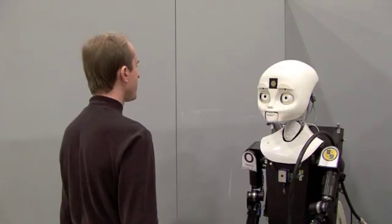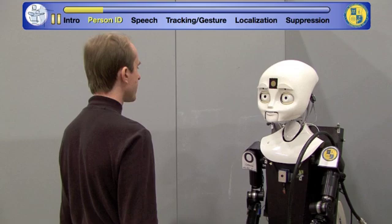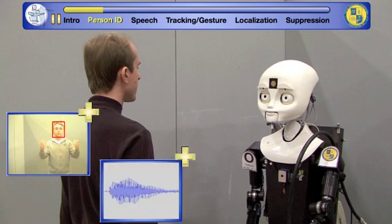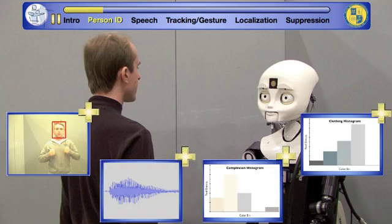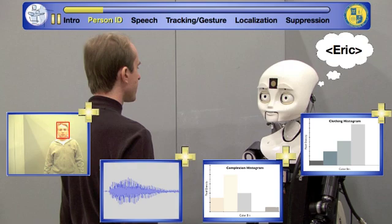Hello, Octavia. Hello, Eric. Octavia recognizes individuals by combining the results from multiple classifiers, including facial and speaker recognizers, as well as complexion and clothing histograms. Knowing with whom the robot is interacting allows the system to use individualized models for speech and gesture recognition.